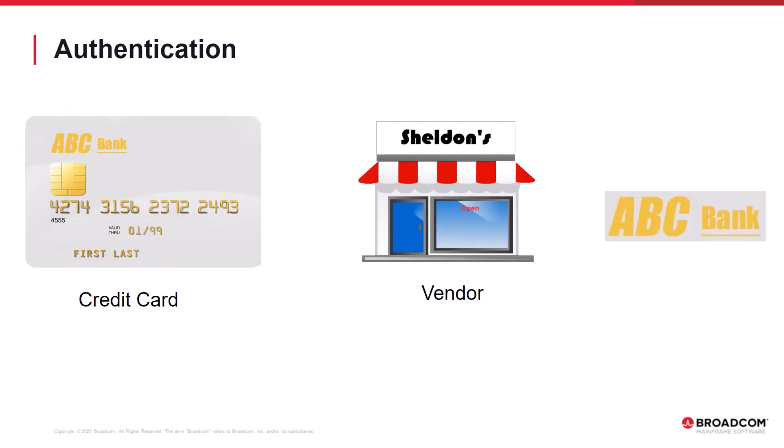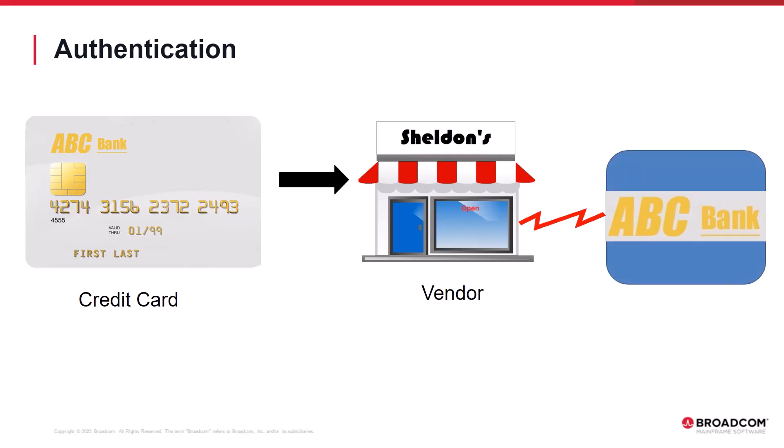To take the analogy further, let's look at how a credit card is used to make a purchase. A user takes their personal credit card to make a purchase at a local store — in this example, the store is Sheldon's. The credit card contains all of the user's personal information. The store will take the credit card information and verify the credit card with ABC Bank, the credit card issuer. Once the issuer authenticates the credit card, the purchase can be completed.